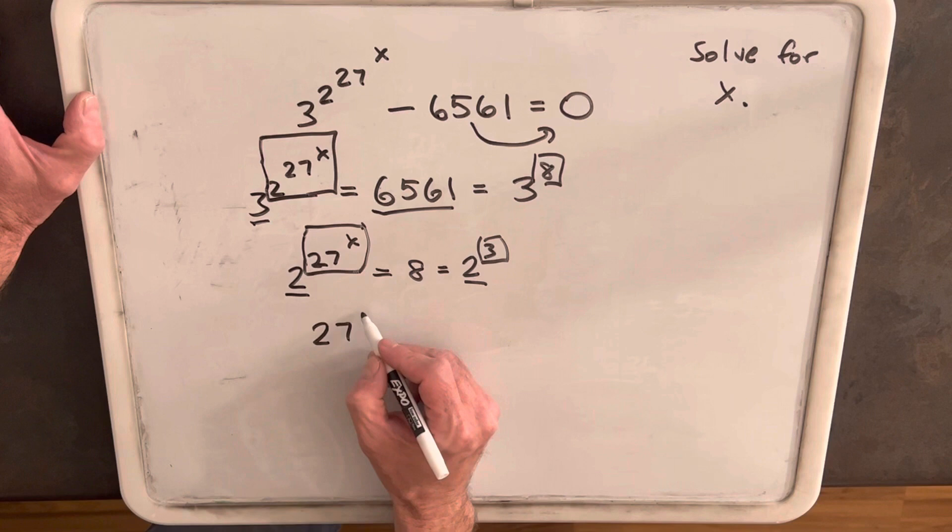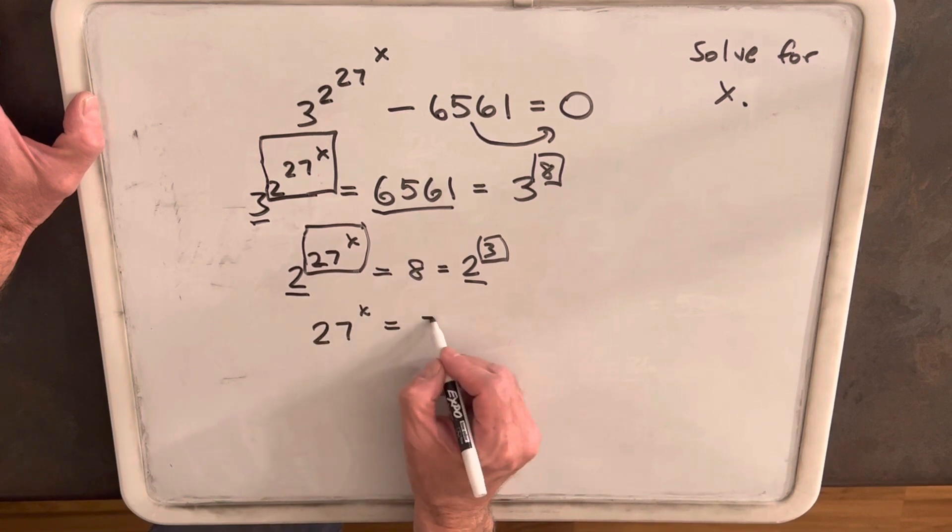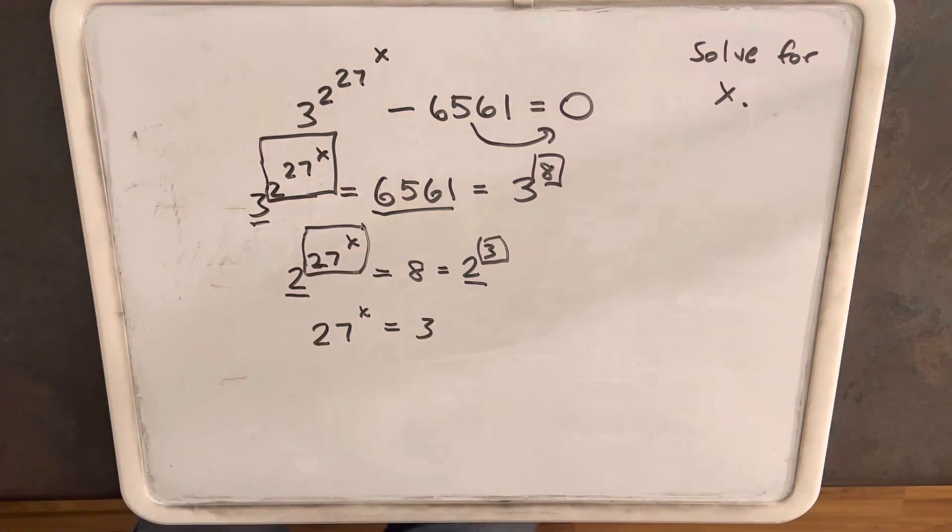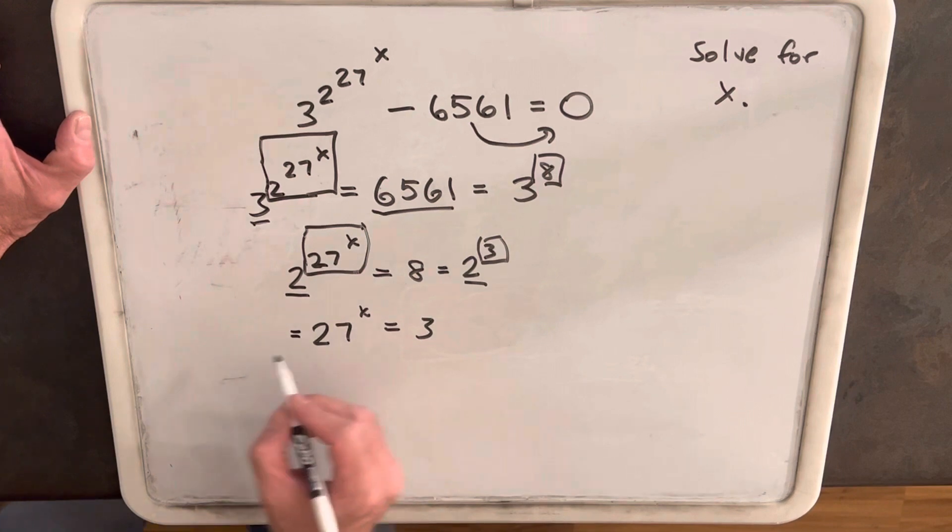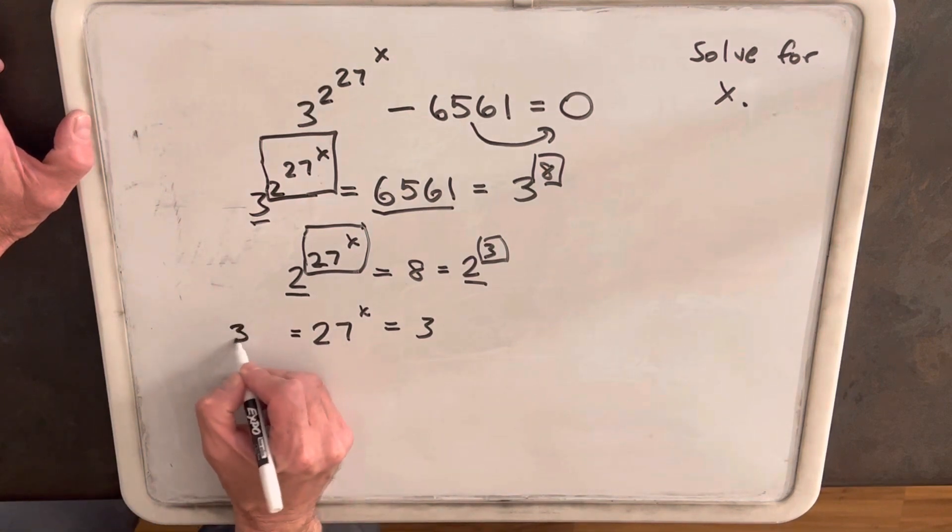So now we're comparing 27 to the x versus 3. And we can't quite do the same thing because the prime factorization of 3 is just 3 because 3 is a prime. But we can actually rewrite the left side, we can write 27 as 3 cubed.